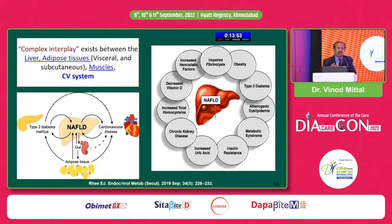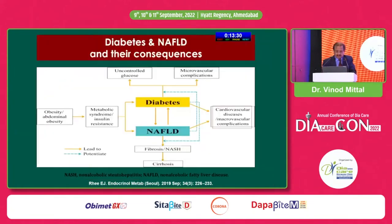There is a complex interaction between adipose tissue, muscles, and liver, which ultimately impacts the cardiovascular system. Lipotoxicity leads to inflammation, release of oxidants, inflammatory cytokines, and increased pro-coagulant state — all of which ultimately increase atherosclerosis and cardiovascular disease.